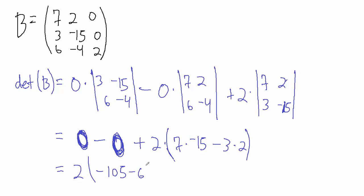So we're running out of room down here, so we'll just keep going to the right. So this is 2 times negative 105 minus 6. Well negative 105 minus 6 is negative 111, and then if we take that and multiply by 2, we get negative 222.